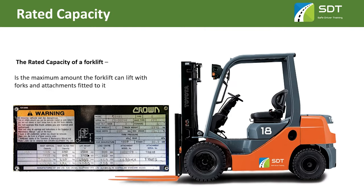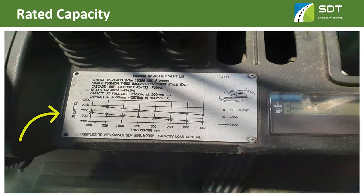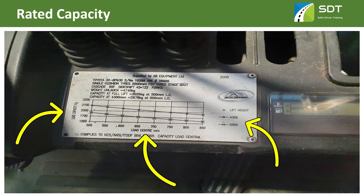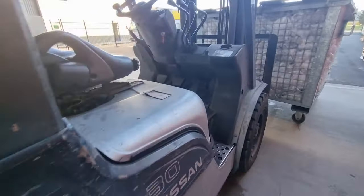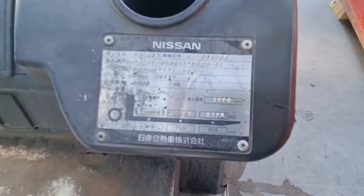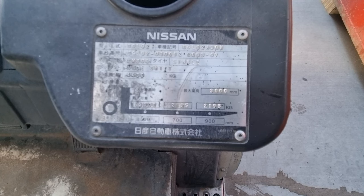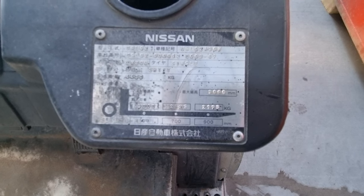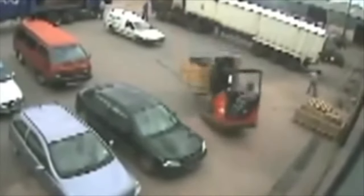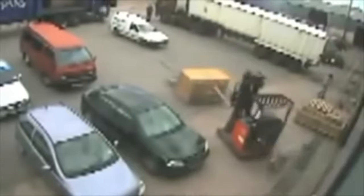The rated capacity of a forklift is the maximum amount the forklift can lift with forks and/or attachments fitted to it. It's a specific weight lifted to a specific height at a given load center distance in ideal conditions. You can usually find the rated capacity by looking at the data plate or load rating chart. You can only handle loads within the rated capacity as shown on the load capacity plate, or the forklift may tip.